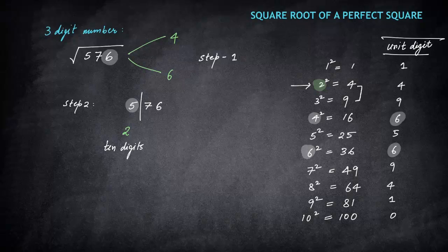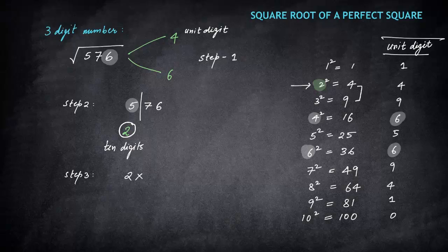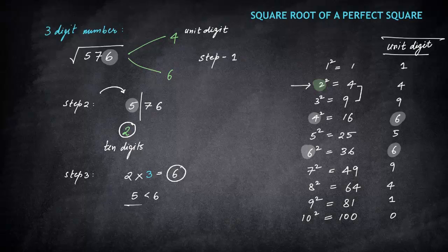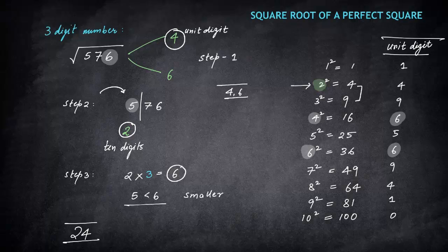Step 3 determines whether the unit digit is 4 or 6. Take the tens digit 2 and multiply by the next consecutive integer: 2 × 3 = 6. Compare this with the split number 5 — since 5 is less than 6, we pick the smaller option from step 1, which is 4. So tens digit is 2 and unit digit is 4, giving the answer 24. The square root of 576 is 24.